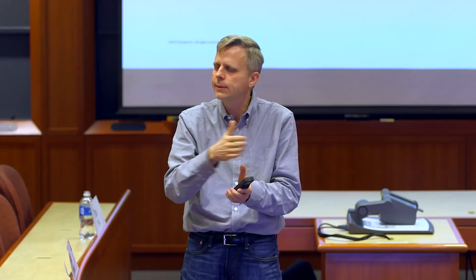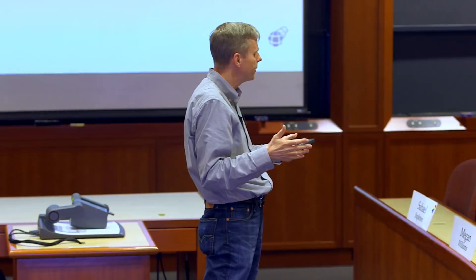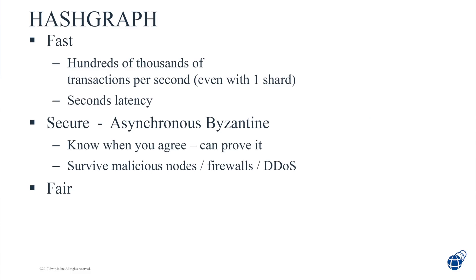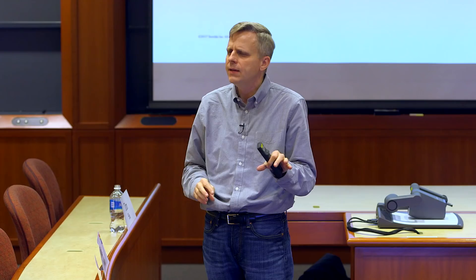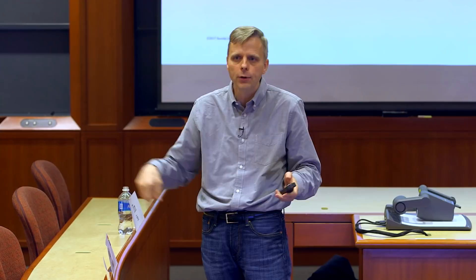We also assume the internet can do bad things — bad actors can set up a firewall around a chunk of our computers and shut them down, partition the internet into two halves, slow down messages by arbitrary amounts, or delete some messages. If you're asynchronous Byzantine, you're resilient to that. If a system is Byzantine but not asynchronous, it may not survive a malicious firewall — and some whole countries have firewalls around them.